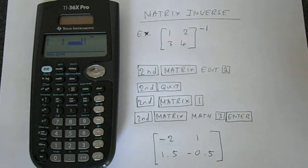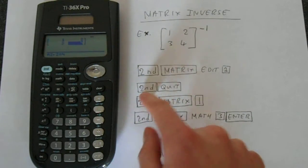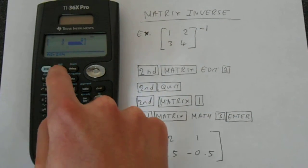We've entered the matrix here. Now the next thing we do is we quit this. We press second function then quit which is right next to the second function button.